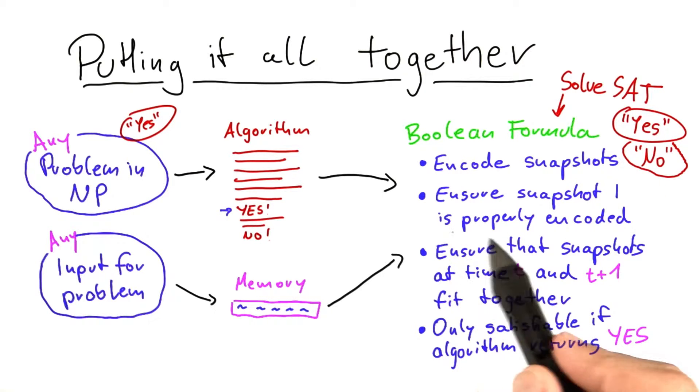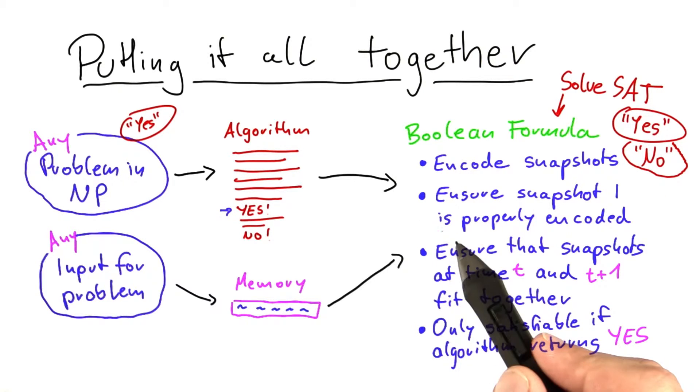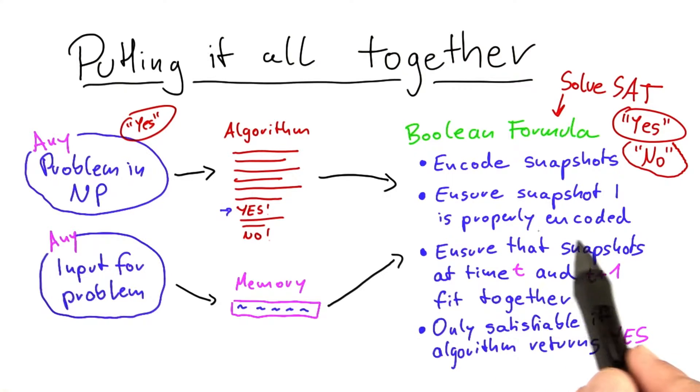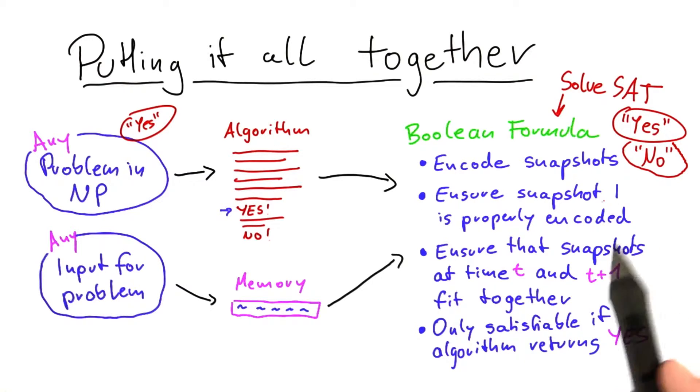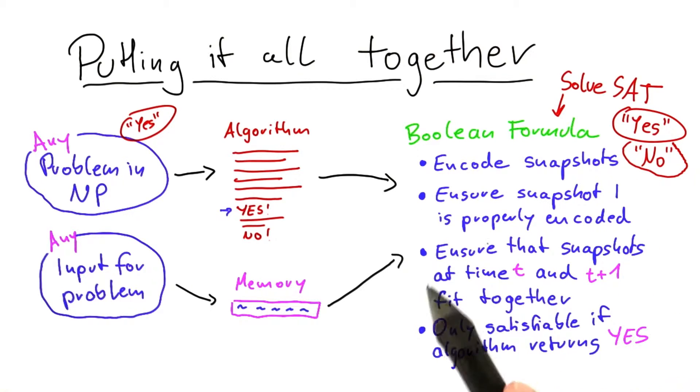It also won't say no due to this property here because we have ensured that the snapshot can be properly encoded. So there's no mistake in the formula here. So it cannot say no because of this here. It also cannot say no because of this here because the machine will always run and you can make the snapshots fit together.